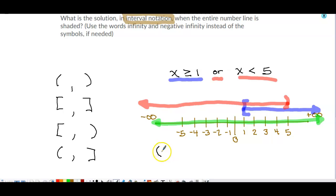So from left to right, we have negative infinity. And then our last number is positive infinity. Again, because it's infinity, it's a parenthesis.